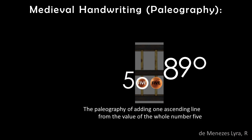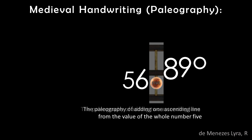This bead also has the base value of 5, but a line slanting upward has been added. So the medieval handwriting adds one ascending line from the value of the whole number 5 to format the digit 6.